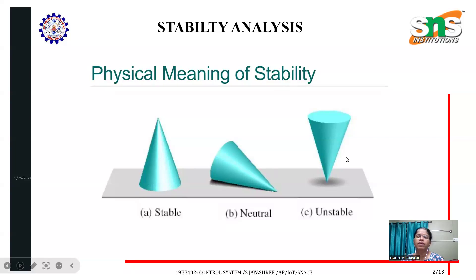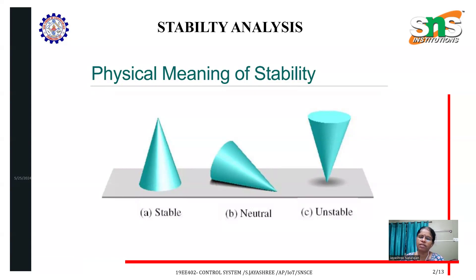The third one we call an unstable system. Look into this cone — it is an inverted cone. If you fix a cone in an inverted shape, it automatically falls down. This is an unstable system. It won't come to a stable state; it is a completely unstable system.